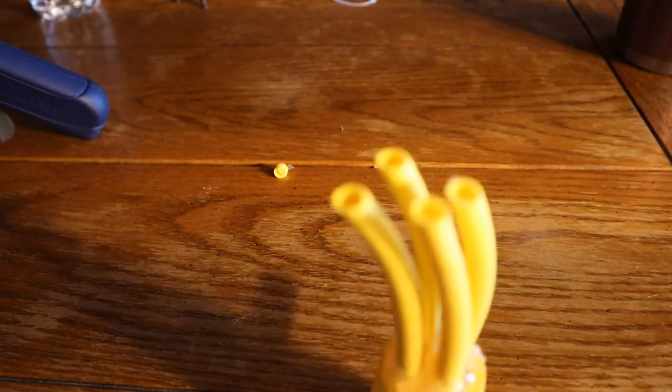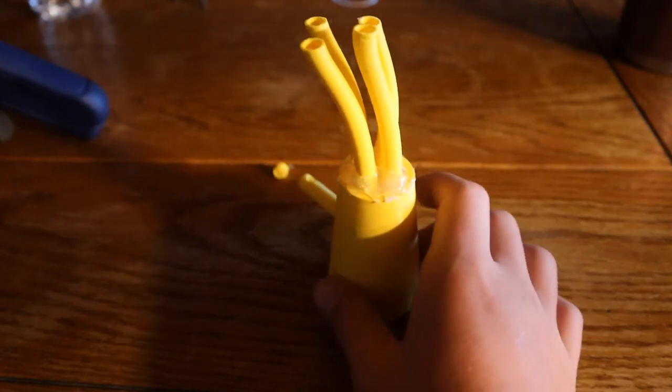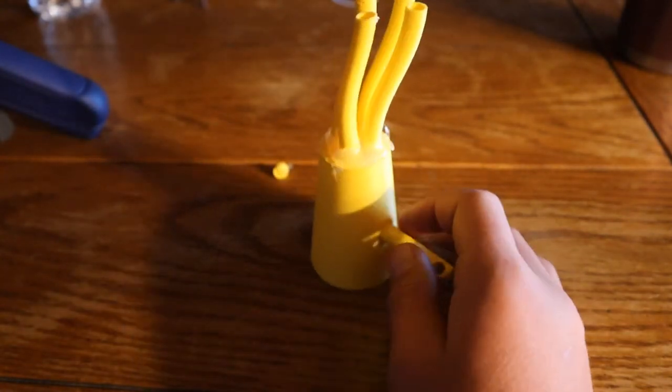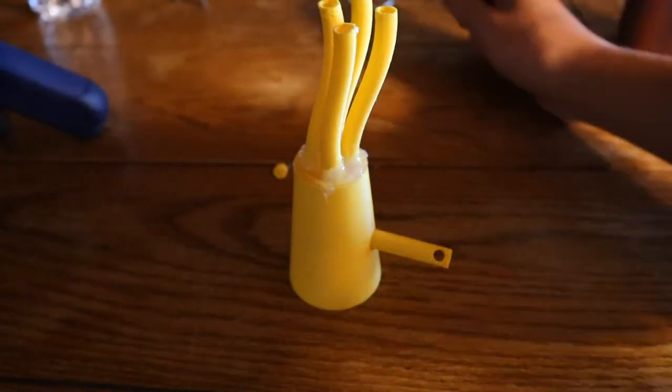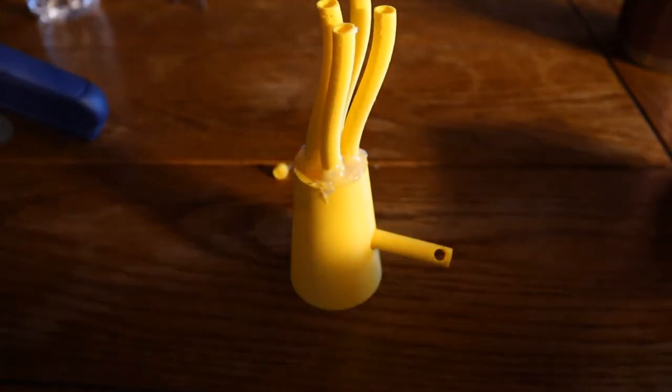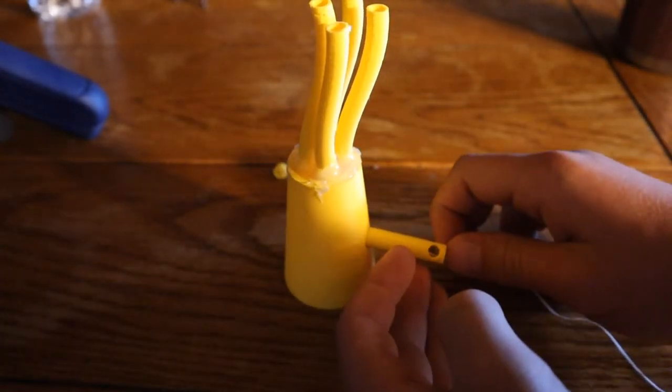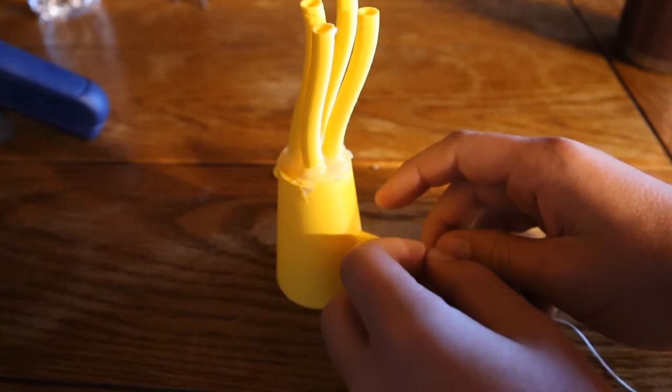Once everything dries, you'll be left with this weird looking thing. Kind of looks like a sea sponge. Then we're going to take some string. I'm using floss, but string works too. Ideally, you want to use string.